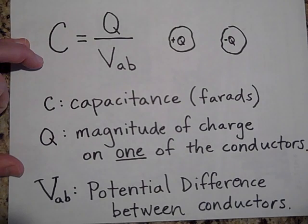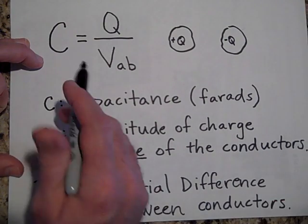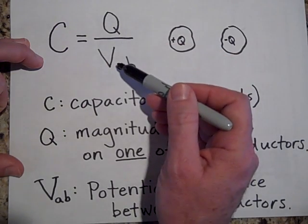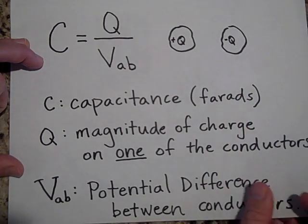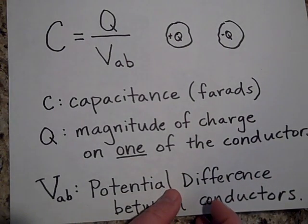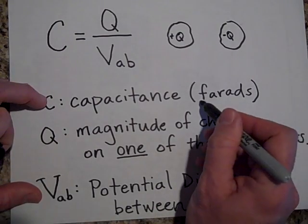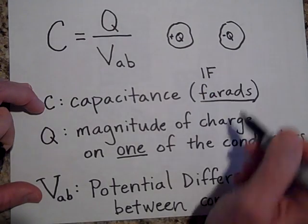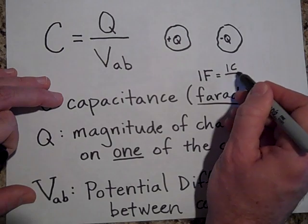One other thing about this then is that if we want to know what the units are for capacitance, they're going to be coulombs over volts. So coulombs over volts is the unit for capacitance. A farad is what we designate that as. So one farad, we will designate with an F, is the same thing as one coulomb per volt.